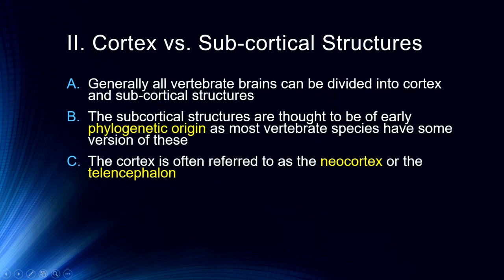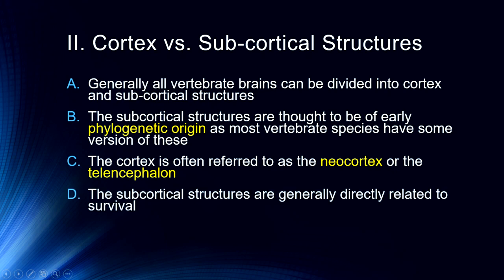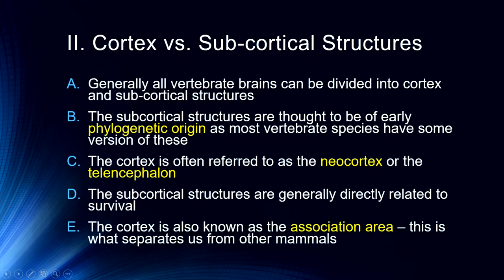The cortex is often referred to as the neocortex, and is also sometimes called the telencephalon. Part of the cortex can be divided into neocortex and mesocortex, which we'll get into in later lectures. It's called the neocortex because it's the newest in terms of evolution, while those subcortical structures are generally those directly related to survival — keeping your heart beating, keeping you moving. The cortex is sometimes also known as the association area. The association areas, in particular the prefrontal cortex, are one of the things that separates us from other mammals, as this is how we develop language, abstract thought, and the ability to plan and coordinate future actions.